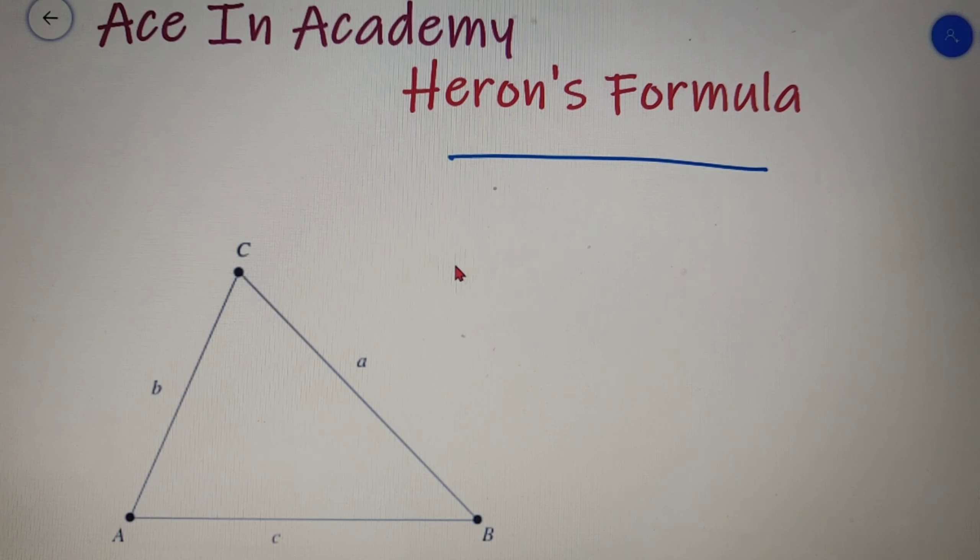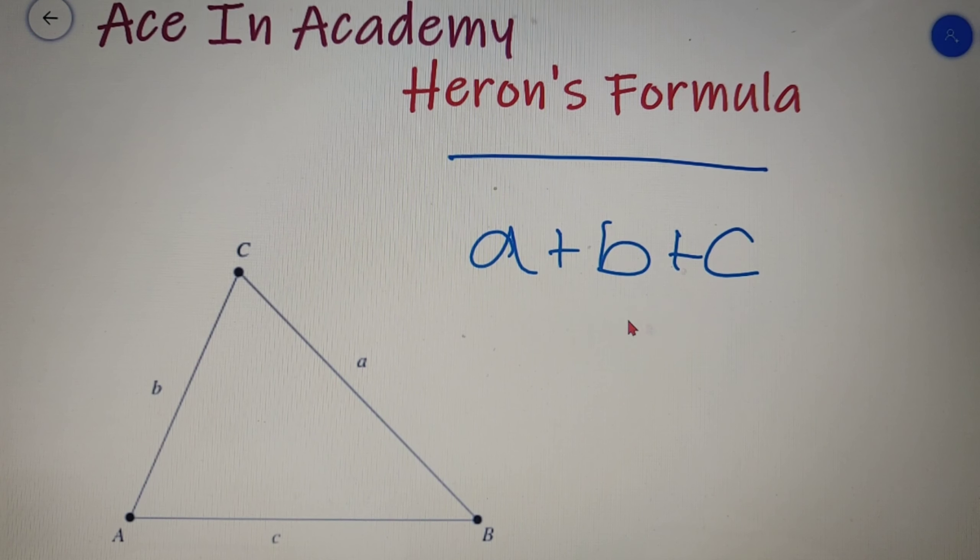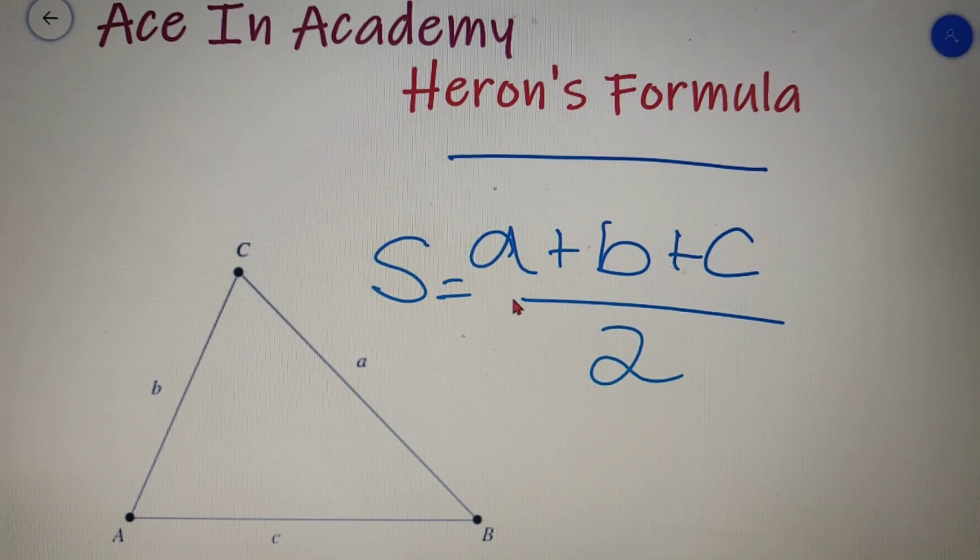We all know that the perimeter of a triangle is equal to sum of all the sides. In this case our perimeter is a plus b plus c. Now semi-perimeter is nothing but half of the perimeter, so the semi-perimeter of a triangle is equal to a plus b plus c by 2.